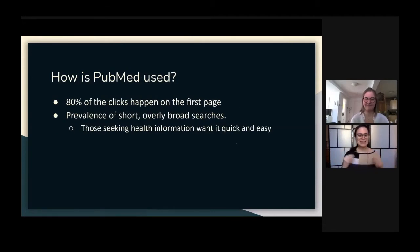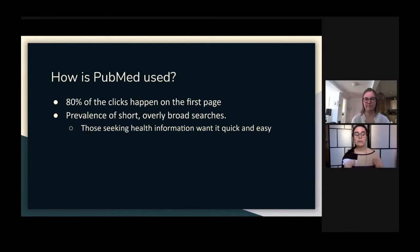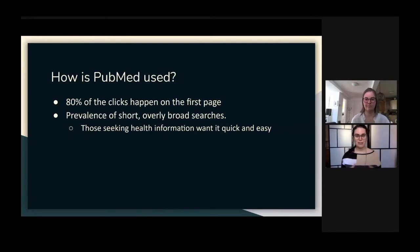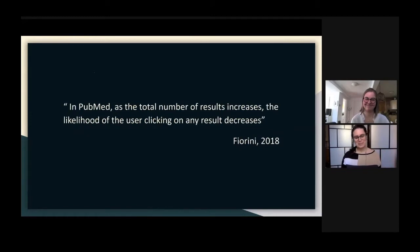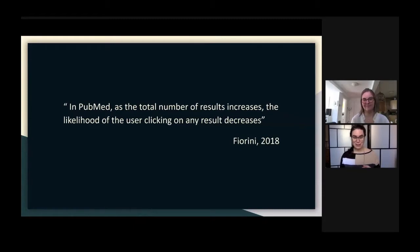How is PubMed used? Like most users of most databases, PubMed users click on the first page — 80% of clicks happen on the first page of results. There is also a prevalence of short, overly broad searches. Those seeking health information, especially health practitioners, are not necessarily expert searchers and they want quick and easy results. Critically, in PubMed, as the total number of results increases, the likelihood of the user clicking on any result decreases. This is really important because PubMed has thousands of new articles added every day, and it's very easy to get hundreds of thousands of results and not find anything useful.